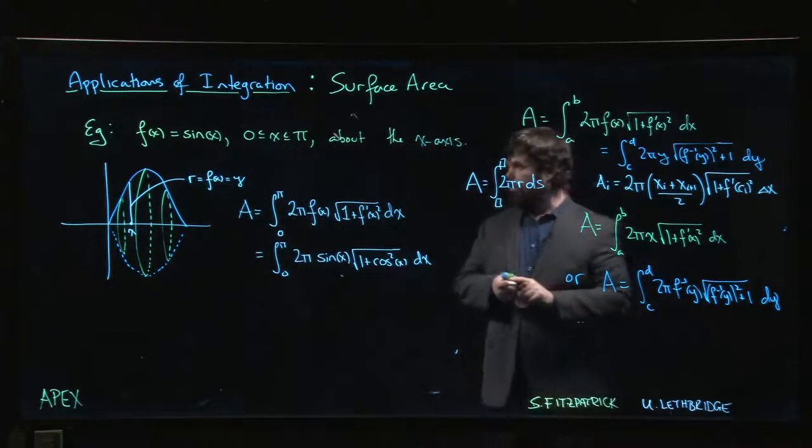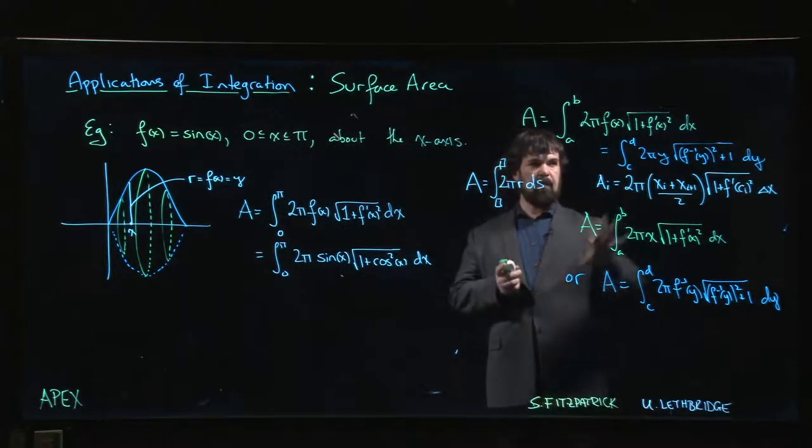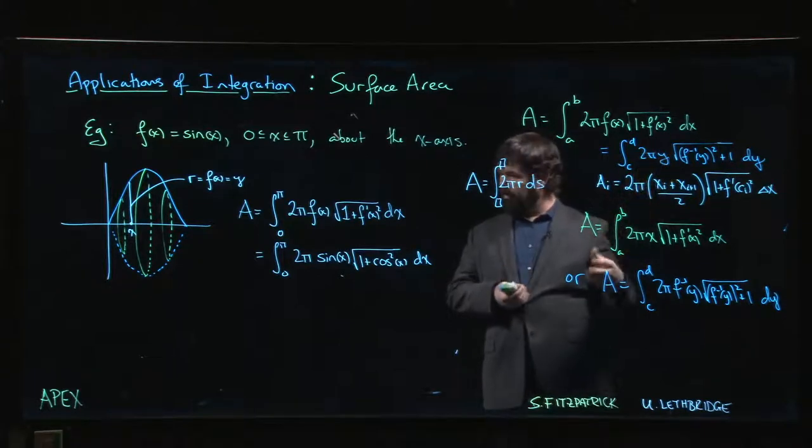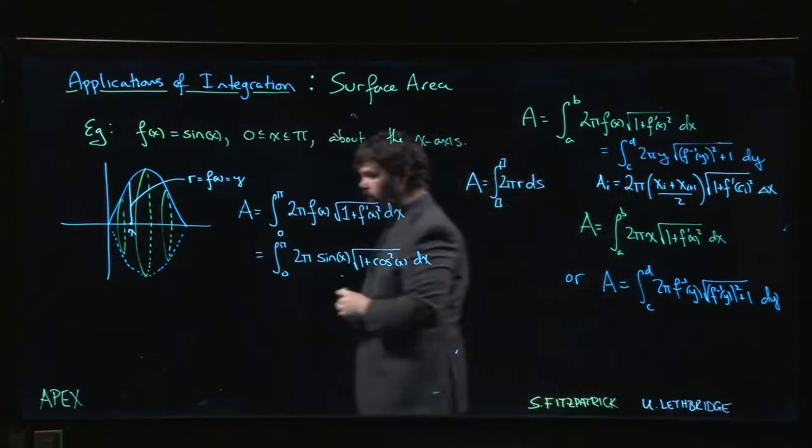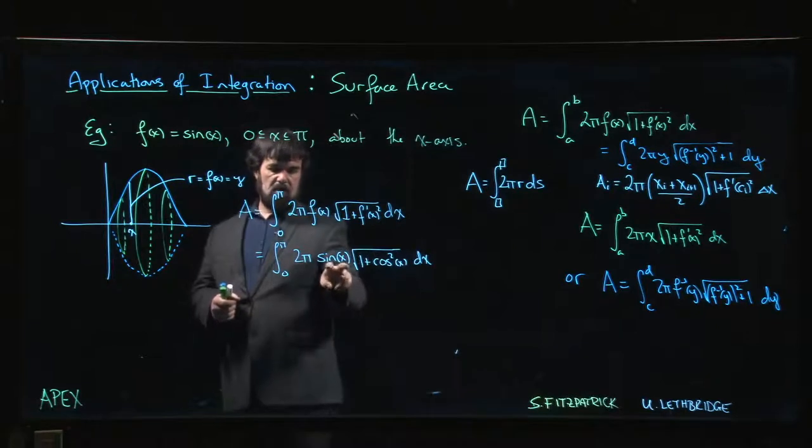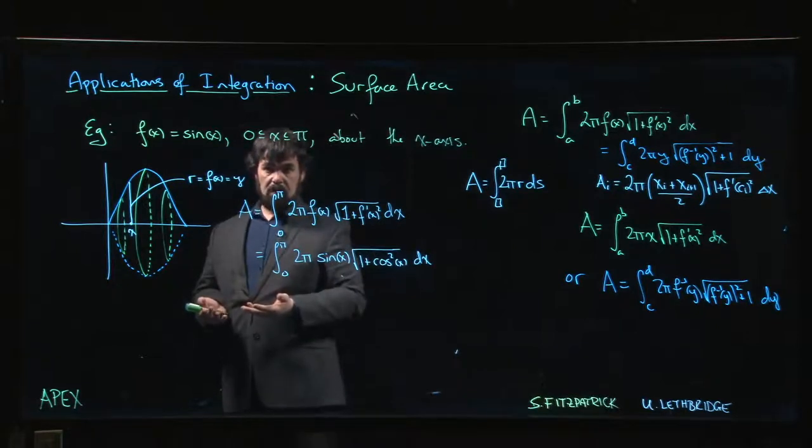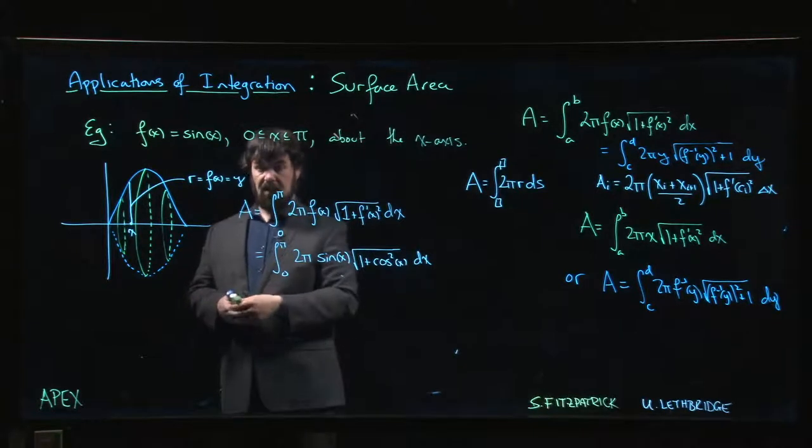Now, in some ways, surface area integrals, despite the more complicated-looking formula, they're almost sometimes easier to evaluate than arc length integrals, because you have an extra bit out front that lets you do a u-substitution, like is the case here.